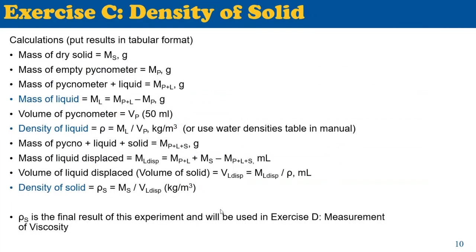Once you've collected the data as shown, you can fill in the table to find the mass of liquid and density of liquid through multiplication, summation, and subtraction. Finally, to find the density of the solid, take the ratio of the mass of the dry solid — the mass of the balls you're dropping — to the volume of liquid displaced, which you can determine from the data collected in the table. The density of the solid is the final result of this stage.